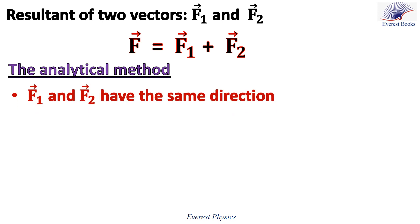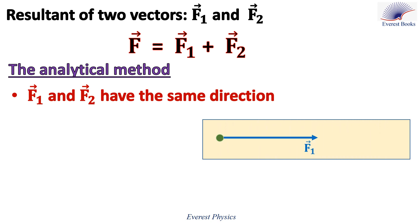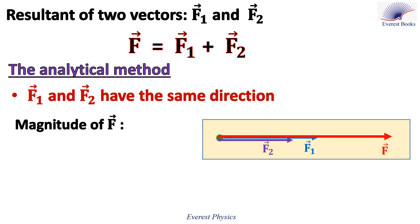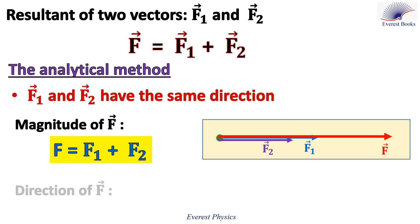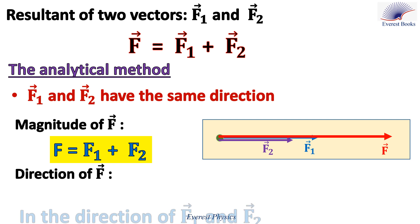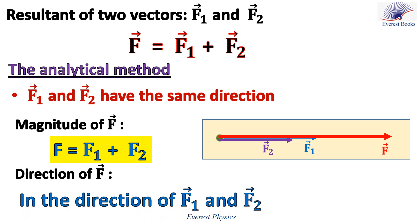In the first example, the two vectors have the same direction. As shown on the figure, F1 and F2 are directed horizontally to the right. So the magnitude of their resultant F is given by the magnitude of the first vector F1 plus that of the second vector F2. And the direction of the resultant F is in the direction of F1 and F2, which is oriented to the right.